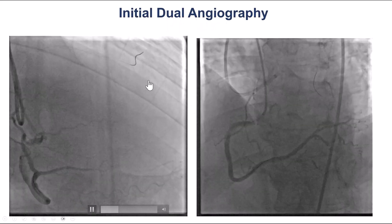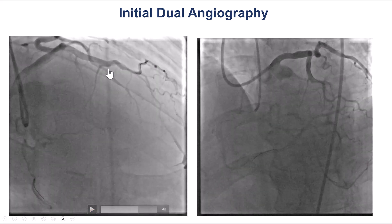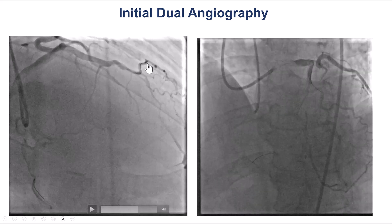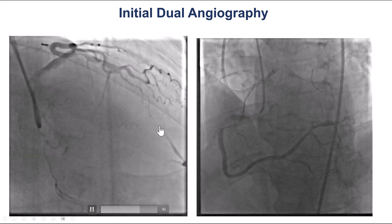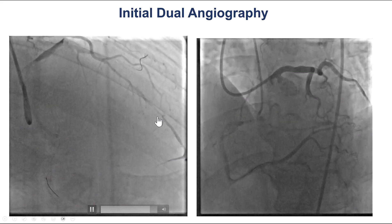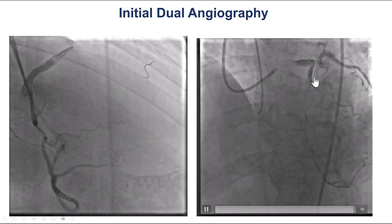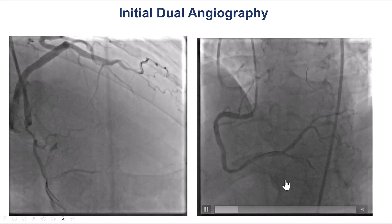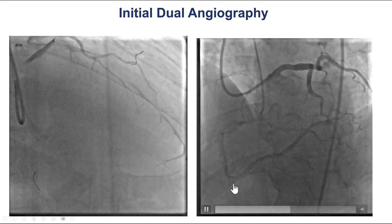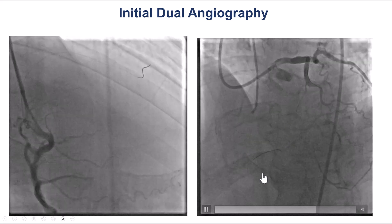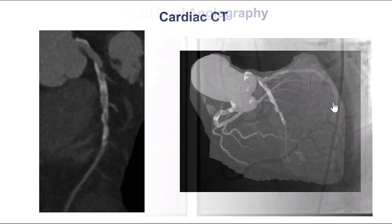This is the dual injection. What we have is a CTO of the mid-LAD right after the takeoff of a fairly large diagonal branch. The distal vessel is filling mainly via ipsilateral collaterals, and this is the same thing in the LAO cranial projection. We do have a fairly large dominant right coronary artery that has been successfully treated, and we have the blunt proximal cap, relatively short length, with a diagonal in the proximal cap.